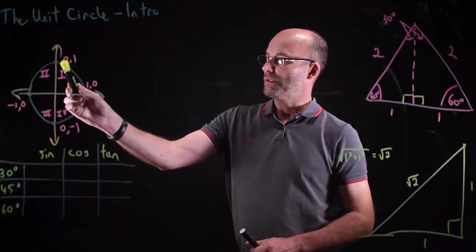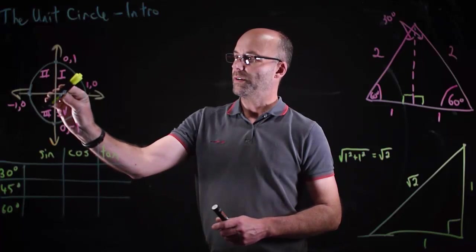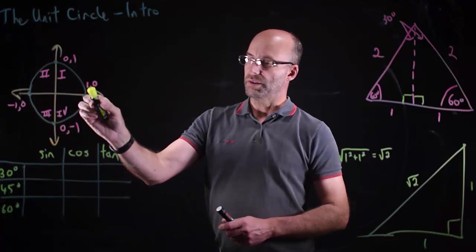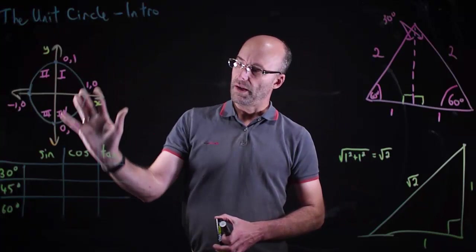Our goal for this video is to be introduced to what's called the unit circle. The unit circle is an important device we use in mathematics — it's the blue circle. It's called the unit circle because it has a radius of one. The radius arm is anchored at (0, 0), the origin, and its radius is always one. We get points where it touches each of the axes — the regular Cartesian x-y axes.